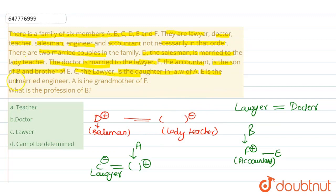E is the unmarried engineer. So, E jo hai unmarried engineer hai. Toh, ye jo E hai, ye kahan hai? Engineer hai. Thik hai, humein itni cheez pata chal gayi.